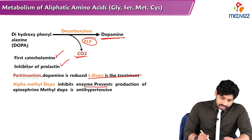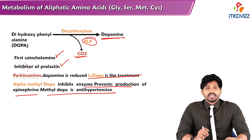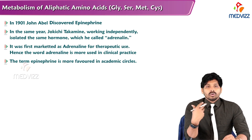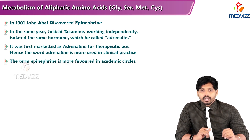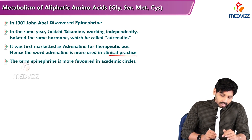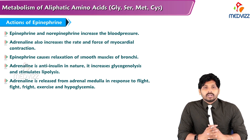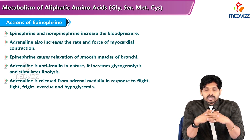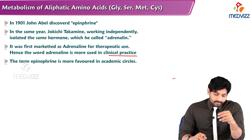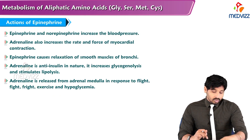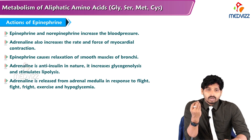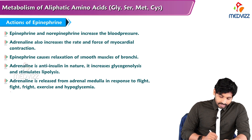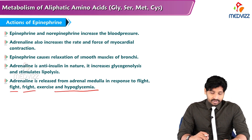Methyldopa is an antihypertensive agent. In 1901, John Abel discovered epinephrine. In the same year, Jokichi Takamine, working independently, isolated the same hormone, which he called adrenaline. It was first marketed as adrenaline for therapeutic use, hence the word adrenaline is more used in clinical practice, while epinephrine is more favored in academic circles. Epinephrine and norepinephrine increase blood pressure. Adrenaline also increases the rate and force of myocardial contraction, causes relaxation of smooth muscles of bronchi, increases glycogenolysis, stimulates lipolysis, and promotes gluconeogenesis. Adrenaline is released from the adrenal medulla in response to flight, fight, fright, exercise, and hypoglycemia.